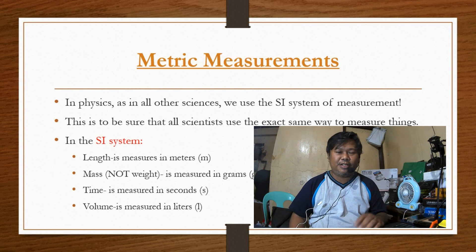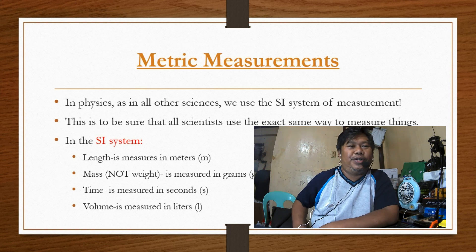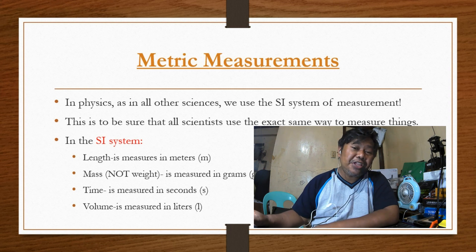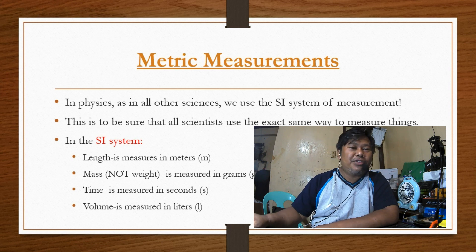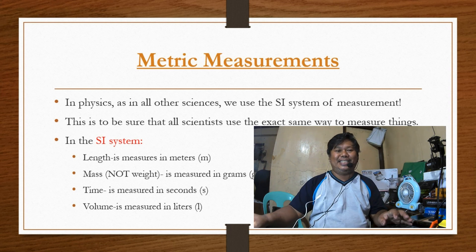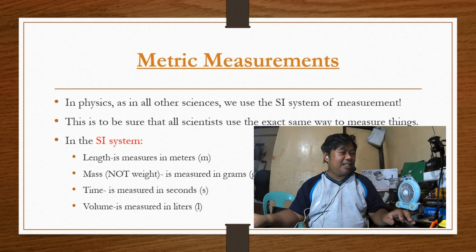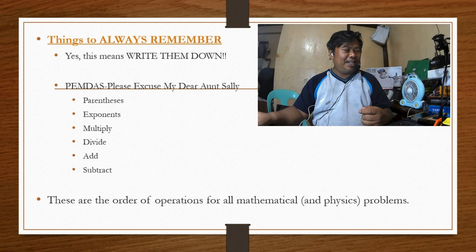In mathematics we use the SI system of measurement to ensure all scientists measure things the same way. In the SI system, length is measured in meters (m), mass — not weight — is measured in grams (g), time is measured in seconds, and volume is measured in liters (L).